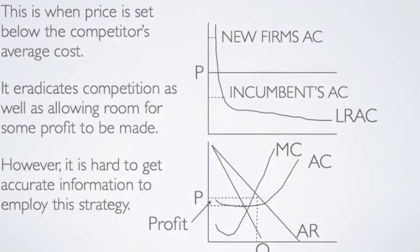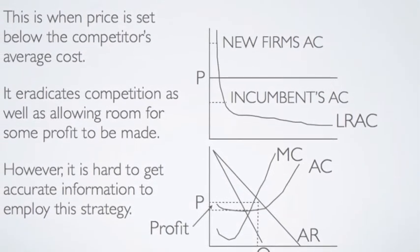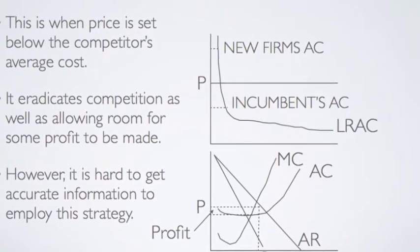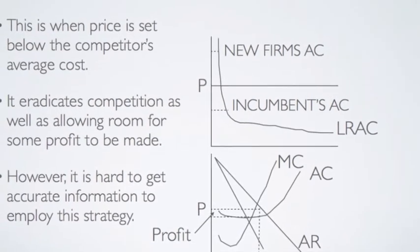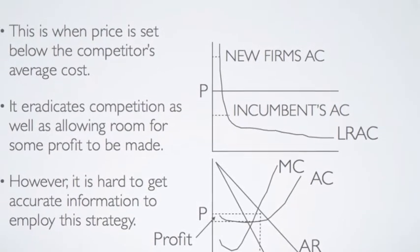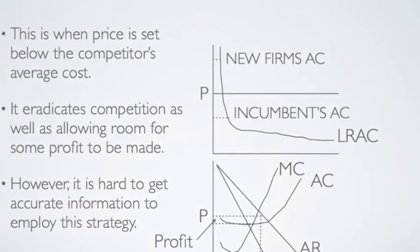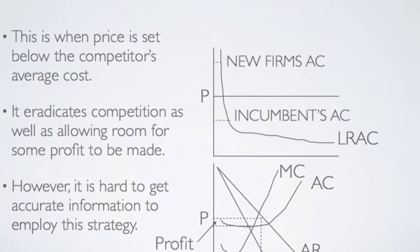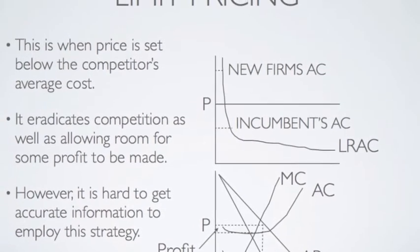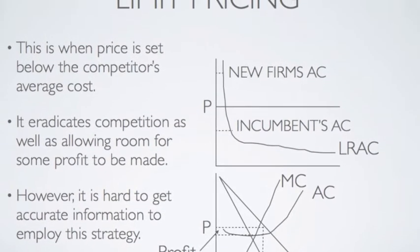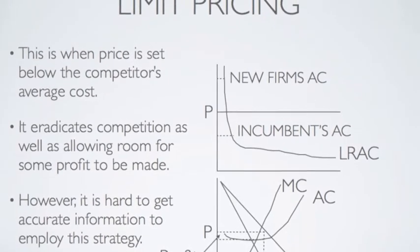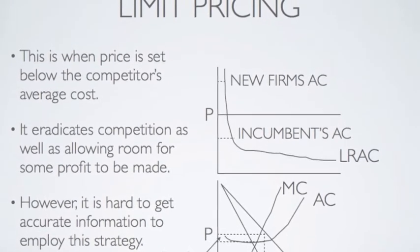Limit pricing is when a price is set below the rival firm's average cost. It eradicates competition while allowing room for some profits to be made. However, it is hard to get accurate information on the average cost of the competitor.